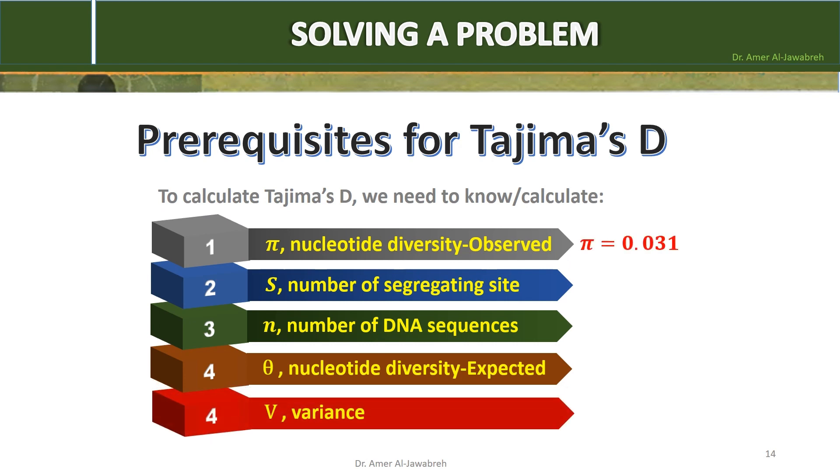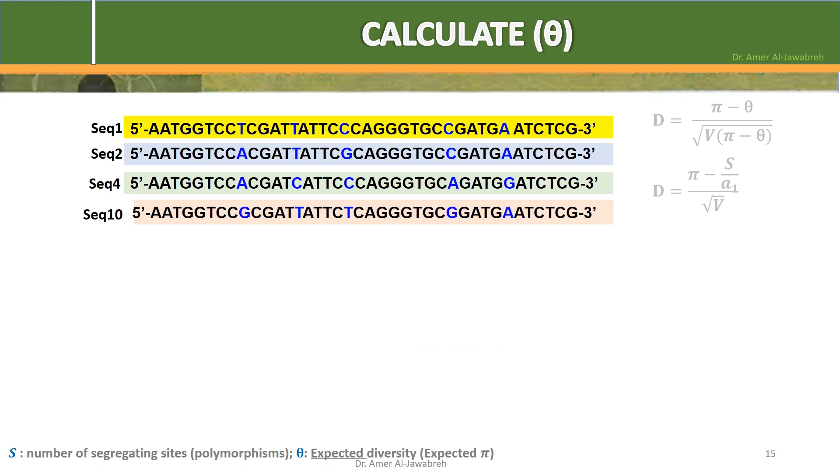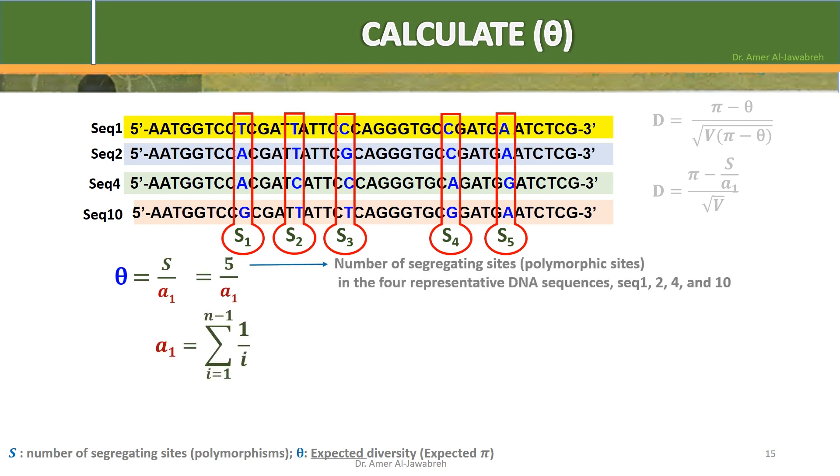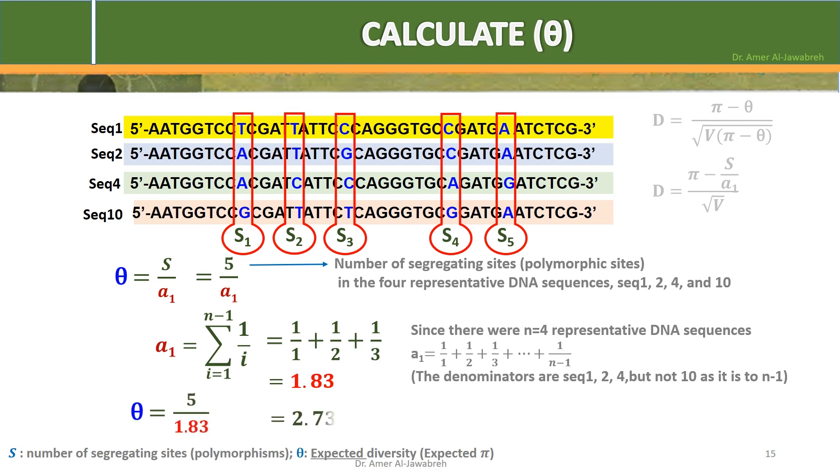Calculate theta. The four sequences show five segregating sites S, which are mismatches between the sequences, which can range from 1 to n where n is the number of sequences. Theta equals S over A1. S equals 5. A1 is the sum of 1 over i as i runs from 1 to n minus 1, which equals 1 over 1 plus 1 over 2 plus 1 over 3, but not 1 over 4 because the maximum range is 1 over n minus 1. Theta equals 5 over 1.83, which equals 2.73.